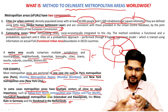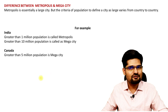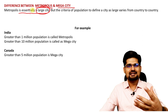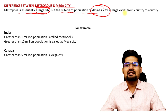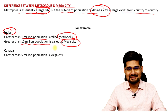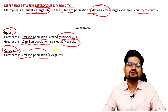There is an important and often confusing difference between a metropolis and a mega city. There is no single common definition across the world. A metropolis is essentially a large mother city with a surrounding relationship. The population threshold varies by country: in India, greater than 1 million is called a metropolis, and greater than 10 million is called a mega city. In Canada, greater than 5 million is called a mega city.